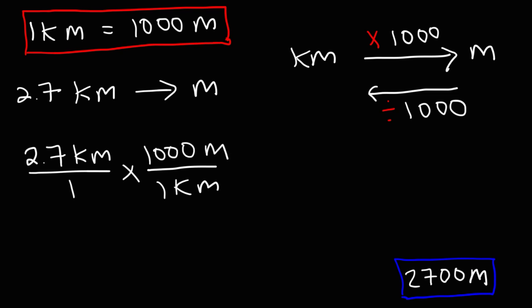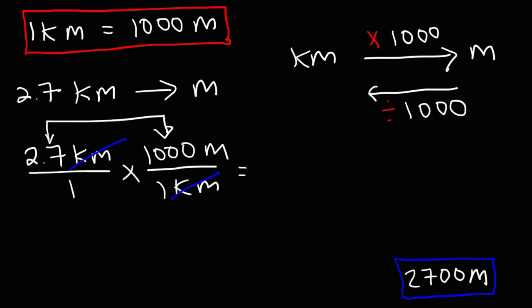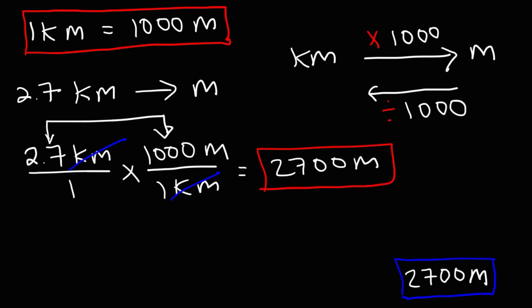When we set it up that way, notice that the unit kilometers will cancel, leaving behind the unit meters. So we multiply the numbers on top: 2.7 times 1,000, and that gives us 2,700 meters. That's how we show our work when converting from kilometers to meters.